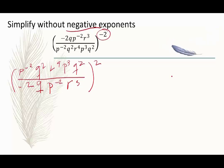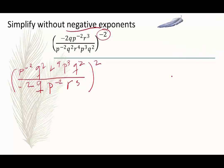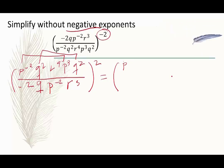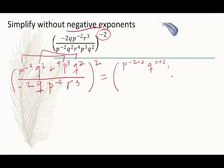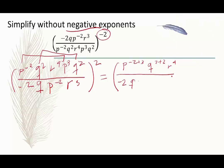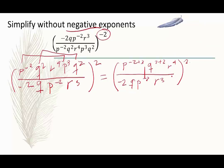The next thing I want to do is gather up and simplify everything on top. We see we have a few p's and a few q's. So using the multiplication rule, I'll gather up my p's and q's to get p to the negative 2 plus 3, q to the 2 plus 2, r to the 4th, all over negative 2, q, p to the negative 2, r cubed, and this is going to be squared.